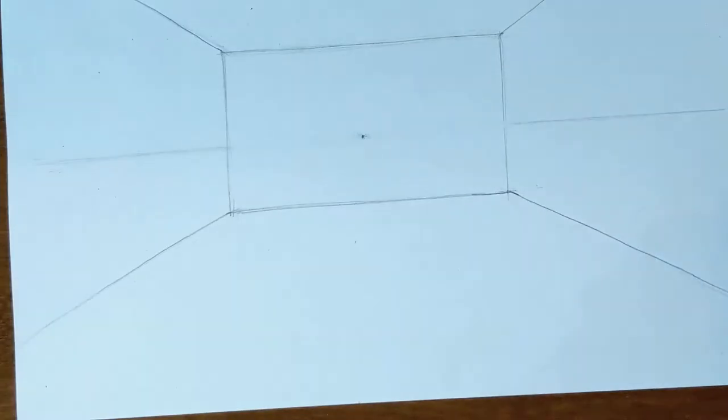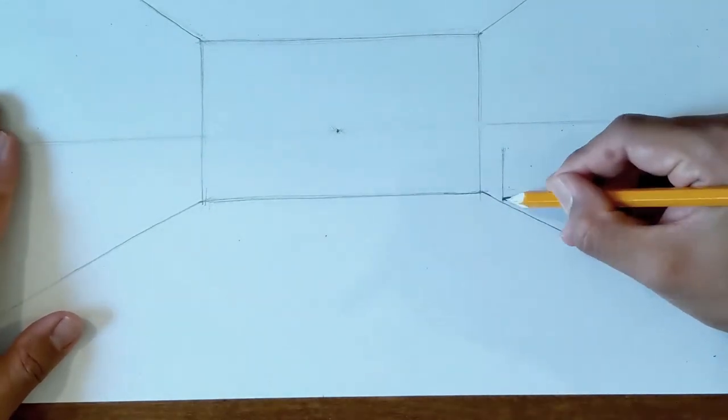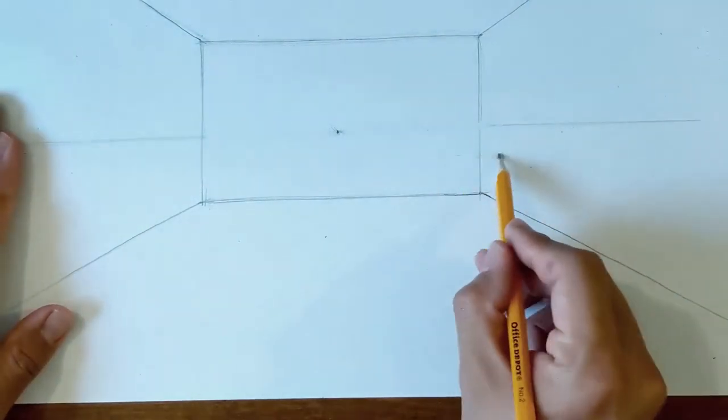So first the back wall, it's a regular rectangle you're looking straight on at it, and then use the vanishing point to draw those corners out.